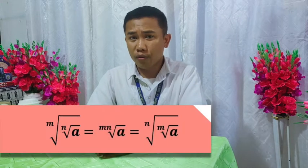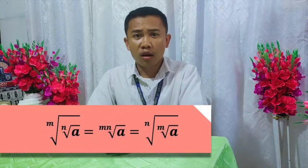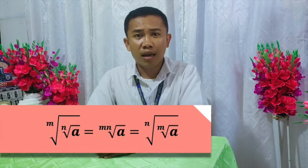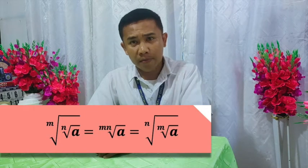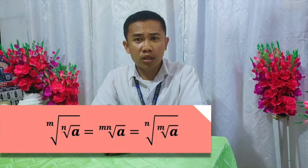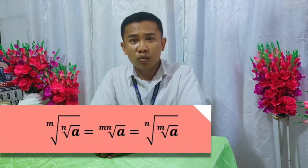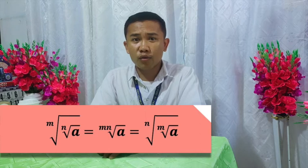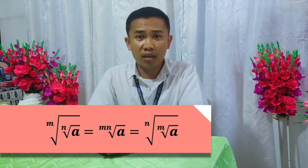There are actually two ways to simplify this type of radical expression. We can use the property: the m-th root of the n-th root of a equals the n-th root of the m-th root of a. Here, you break down the index of the radical into two factors, where the indices are factors of the index of the given radical expression. Make sure that the index of the inner radical is greater than the index of the outer radical.